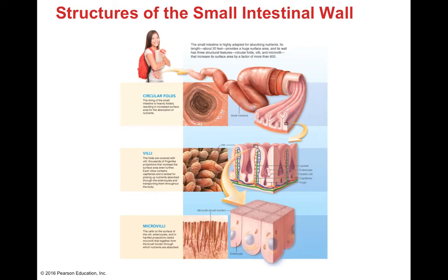The small intestinal wall features circular folds that help propel food. Cross-sections reveal villi, which contain a central lacteal — lymphatic fluid that picks up fats — as well as capillaries. Goblet cells secrete more digestive enzymes. At the tips of the villi we find microvilli with brush border enzymes, which further maximize the surface area available for absorption.